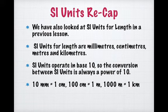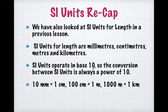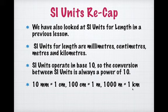Before the break, we were also looking at SI units — our metric units of measurement, typically used by almost the entire rest of the world. For length specifically: millimeters, centimeters, meters, and kilometers. SI units operate in base 10, which is why conversions between them are always 10, 100 (10 squared), or 1,000 (10 cubed). The main conversions to know: 10 millimeters in one centimeter, 100 centimeters in one meter, and 1,000 meters in one kilometer. We also did the measuring tape activity and looked at references for each of these.